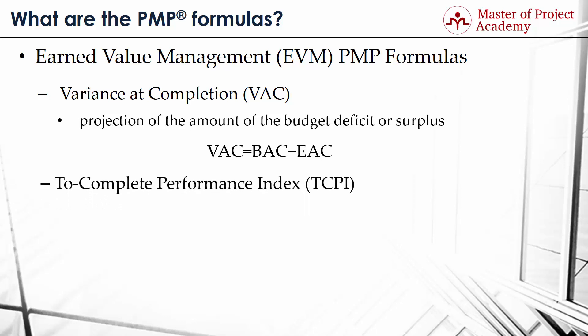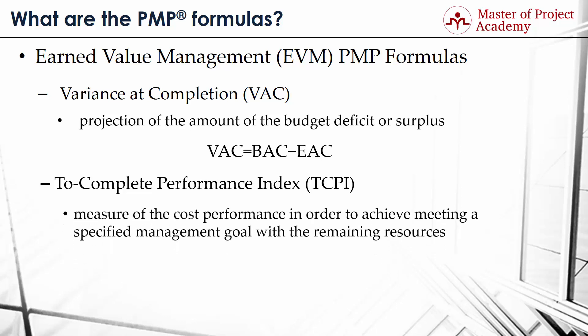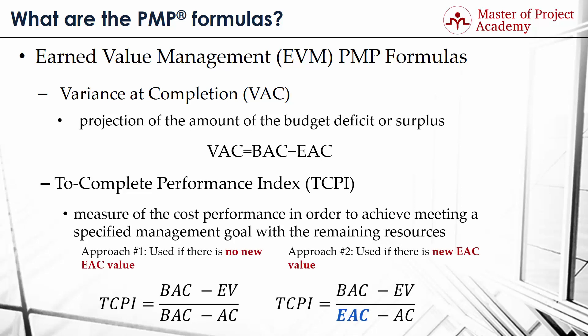PMP formula number 11: To Complete Performance Index or TCPI. TCPI is a measure of the cost performance required to achieve a specified management goal with the remaining resources. It represents the ratio of the cost to finish the outstanding work to the budget available. There are two approaches: Approach 1, used when there isn't a new EAC value: TCPI equals the result of BAC minus EV, divided by the result of BAC minus AC. Approach 2, used when there is an EAC value: TCPI equals the result of BAC minus EV, divided by the result of EAC minus AC.